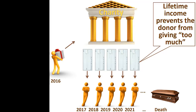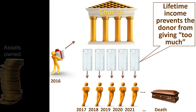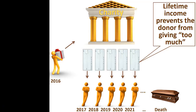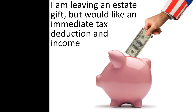A charitable gift annuity is designed to overcome this worry about outliving one's assets by providing a lifetime source of income. Where a donor might regret having made a major gift of assets if she later lived too long and needed those assets for regular lifetime spending, such concerns are alleviated by giving through a charitable gift annuity.